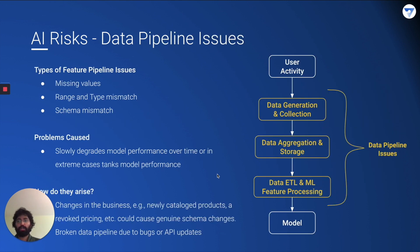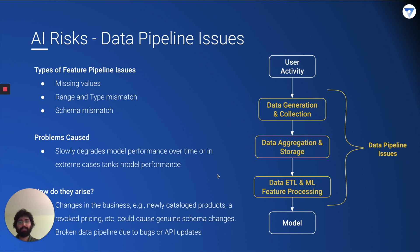Data pipeline issues are another AI risk. Feature pipeline problems include missing values, range and type mismatches — for example, suddenly seeing ages of 300, or a categorical variable receiving a float input — and schema mismatches where two columns are swapped, causing your income column to feed into the age column and vice versa. These can degrade model performance slowly or cause immediate issues. They arise from changes in your business such as newly cataloged products not adequately represented in the pipeline, changes in pricing, or simply a bug or an API update.